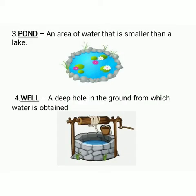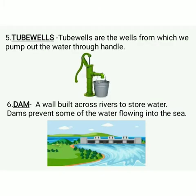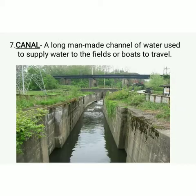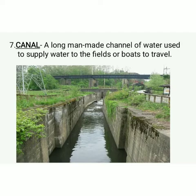An area of water that is smaller than a lake is called a pond, and a deep hole in the ground from which water is obtained is called a well. Tube wells are wells from which we pump out water through a handle. A wall built across rivers to store water is called a dam. A long man-made channel of water used to supply water to fields or for boats to travel is called a canal.